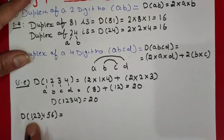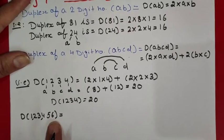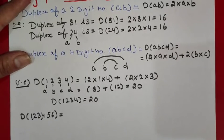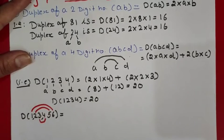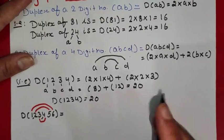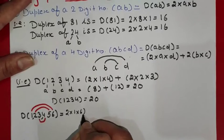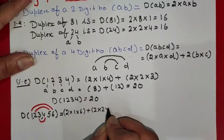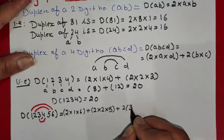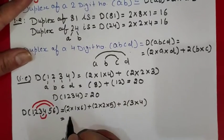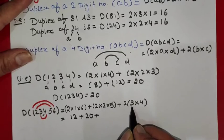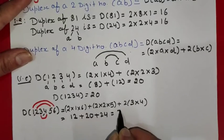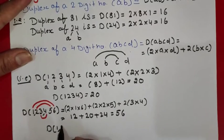For the six-digit number 123456, since it is an even-digited number we follow the rainbow pattern, multiplying the outermost pair, then the next pair, then the innermost pair: 2×1×6 + 2×2×5 + 2×3×4 = 12 + 20 + 24 = 56. So the duplex of 123456 is 56.